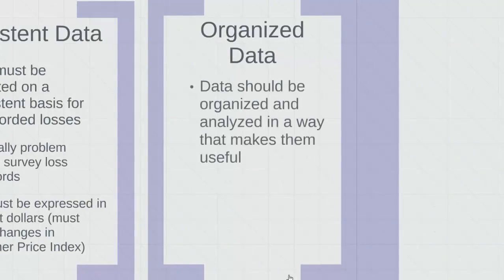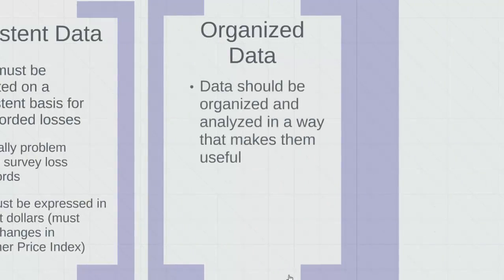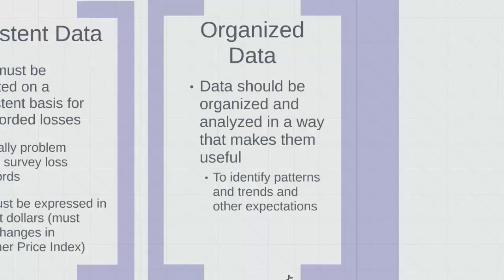And last, data must be organized. Data should be organized and analyzed in a way that makes it useful. Without organized data, you can't identify patterns and trends and other expectations. Organized means sorting the data by various demographic and other risk-related characteristics. For our data set, for example, we organize it by parish, size of the business, industry type, and other factors that relate to risk. If we lumped hurricane-related losses in South Louisiana with those in Central or North Louisiana, that would not give us a good depiction of actual loss exposures.